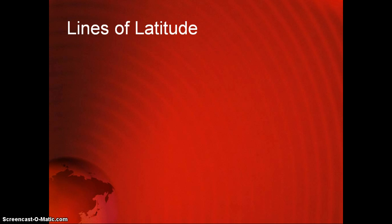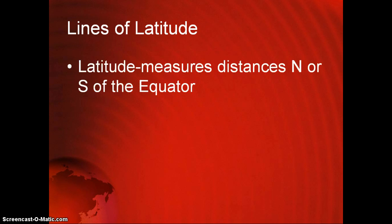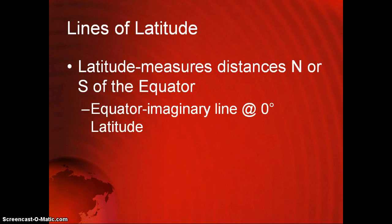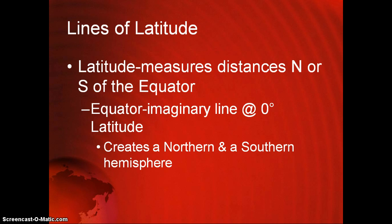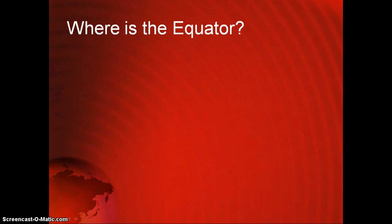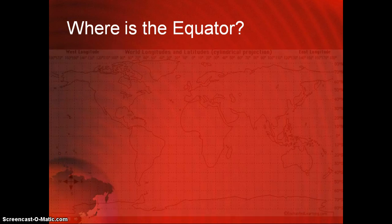To understand absolute location, you need to understand lines of latitude and longitude. Latitude measures distances north or south of the equator. In order to understand this, you need to know what the equator is. The equator is the imaginary line at zero degrees latitude. What I'd like you to do now is flip to the second page of your notes and locate the equator.